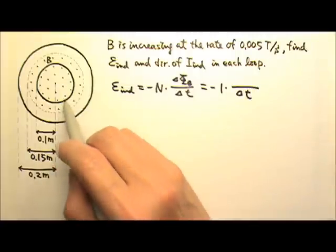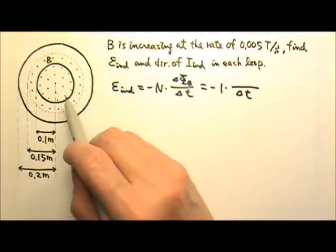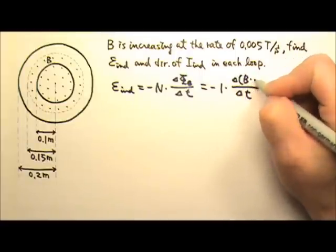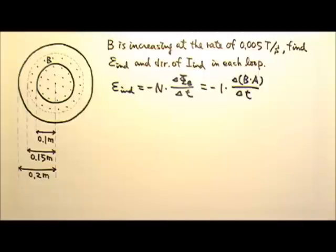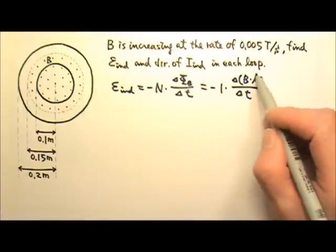And when the loops are in this orientation, the phi B is simply B times A. Because for both loops, the area is not changing. Area is a constant.